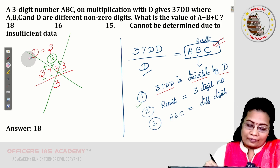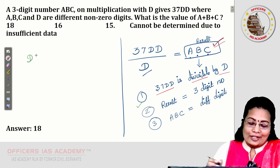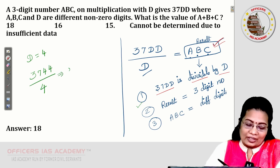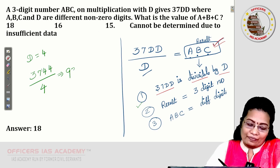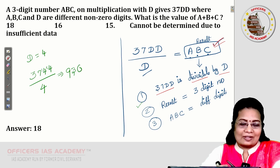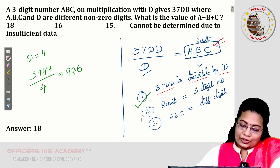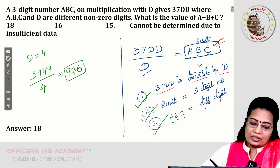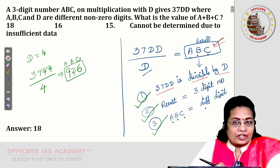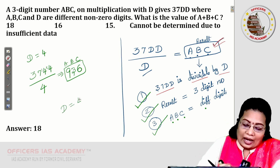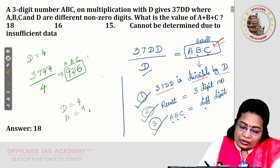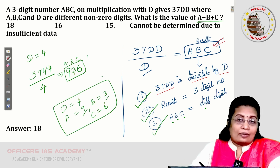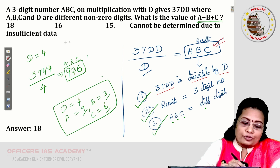Fourth trial with D = 4: 3744 divided by 4. Working through: 9 × 4 = 36, carry 1; 3 × 4 = 12, carry 2; 6 × 4 = 24. The result is 936. Checking all conditions: 3744 is divisible by 4 ✓, the result 936 is a three-digit number ✓, and A = 9, B = 3, C = 6 are all different digits ✓. So A + B + C = 9 + 3 + 6 = 18. The answer is option A, 18.